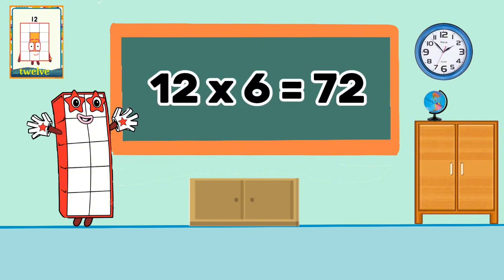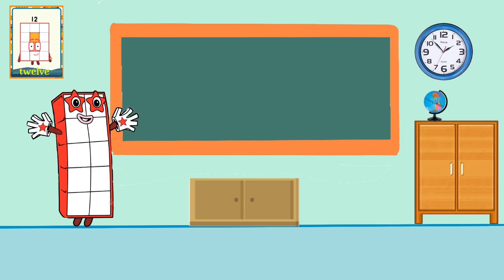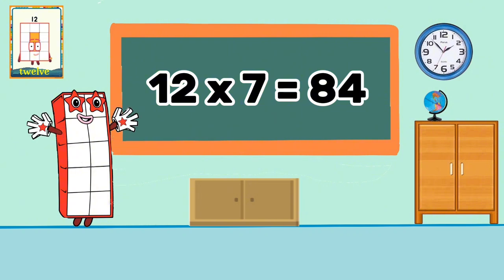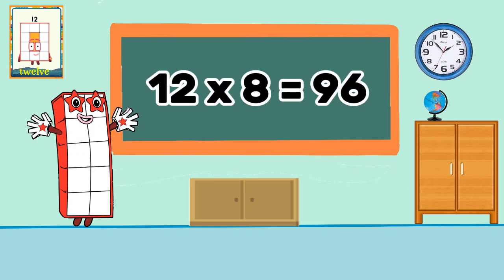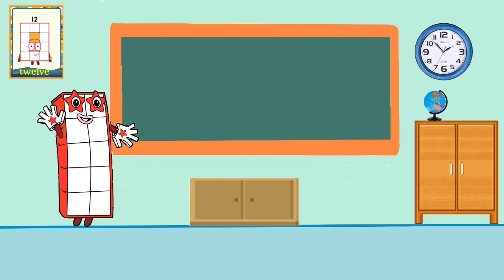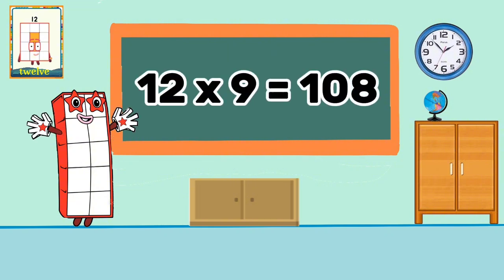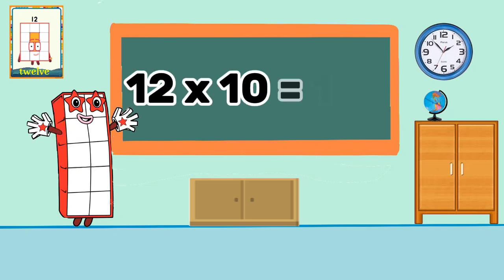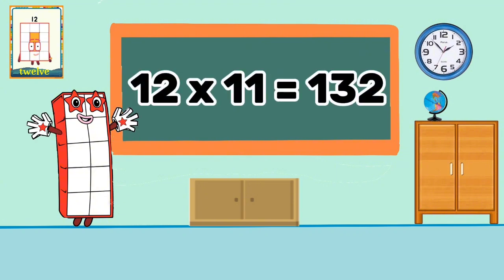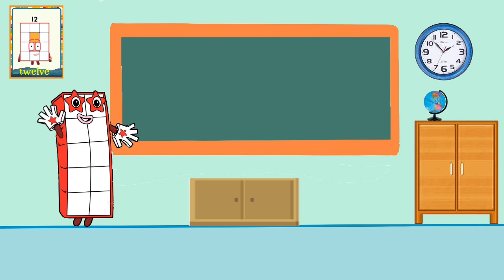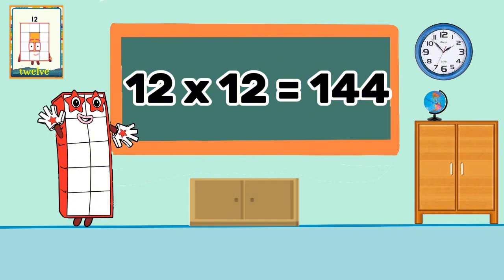12 times 6 equals 72. 12 times 7 equals 84. 12 times 8 equals 96. 12 times 9 equals 108. 12 times 10 equals 120. 12 times 11 equals 132. 12 times 12 equals 144.